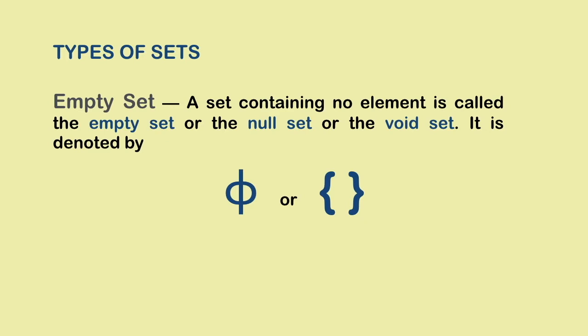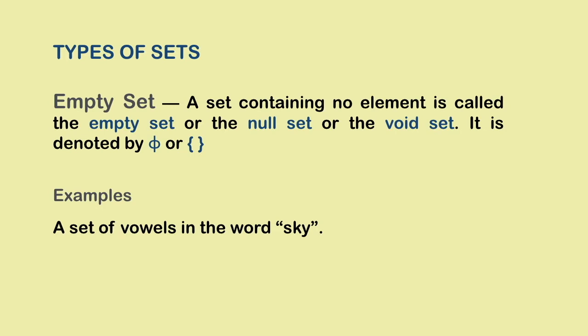An example of an empty set would be a set of vowels in the word sky. Now, there are no vowels in the word sky and so there is no element in this set. What we have is an empty set.